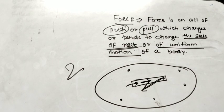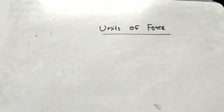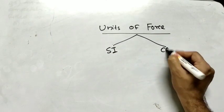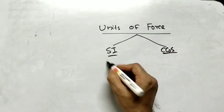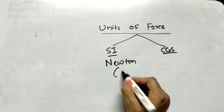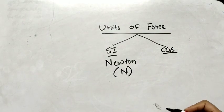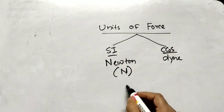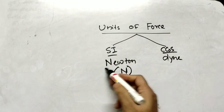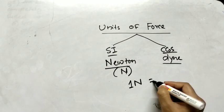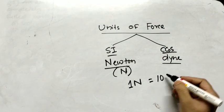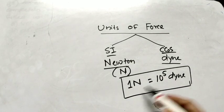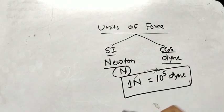Now the units of force. We have two types of units: SI and CGS. The SI unit of force is Newton, written as N. The CGS unit of force is Dyne. The relation between them is: 1 Newton equals 10 to the power 5 Dyne. Let's see how we get 10 to the power 5.